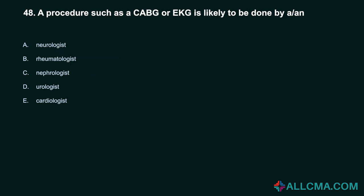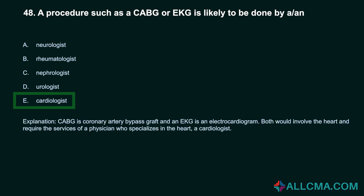Question 48: A procedure such as a CABG or EKG is likely to be done by a: A. Neurologist. B. Rheumatologist. C. Nephrologist. D. Urologist. E. Cardiologist. Correct answer: E. Cardiologist. CABG is coronary artery bypass graft and an EKG is an electrocardiogram. Both involve the heart and require the services of a physician who specializes in the heart — a cardiologist.